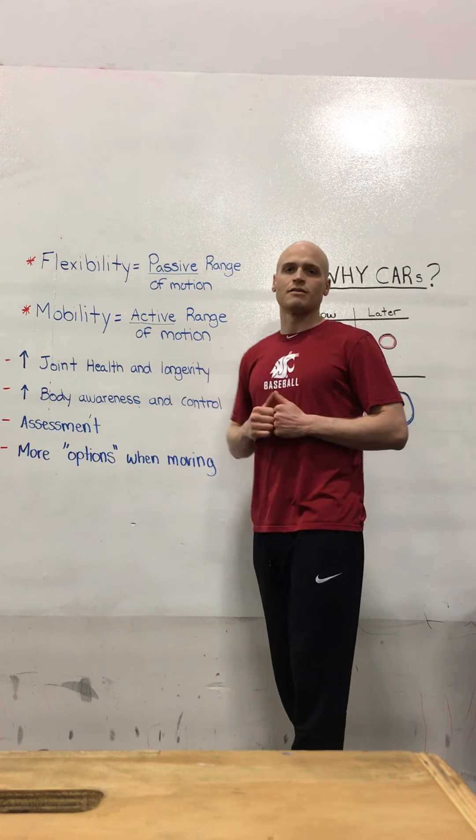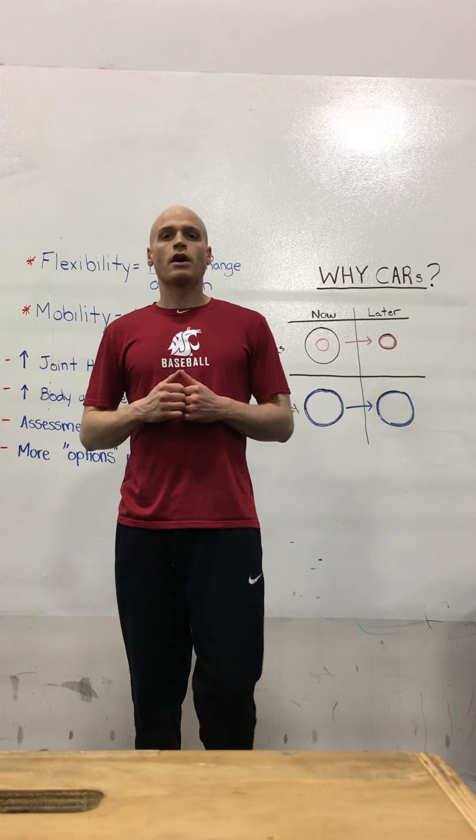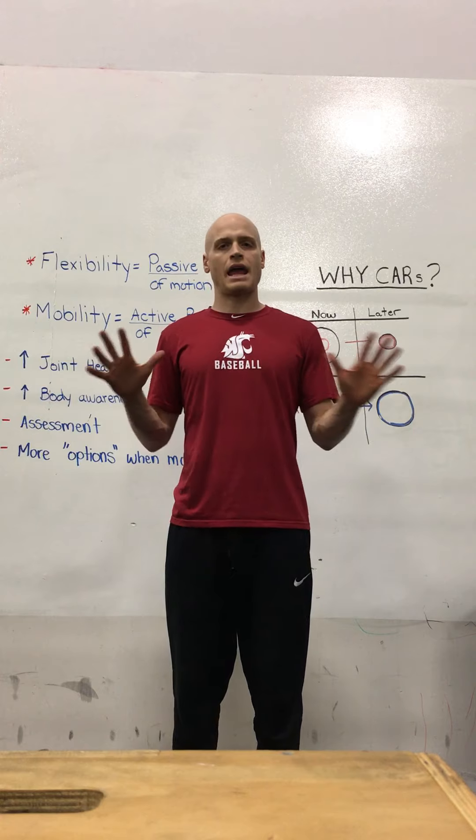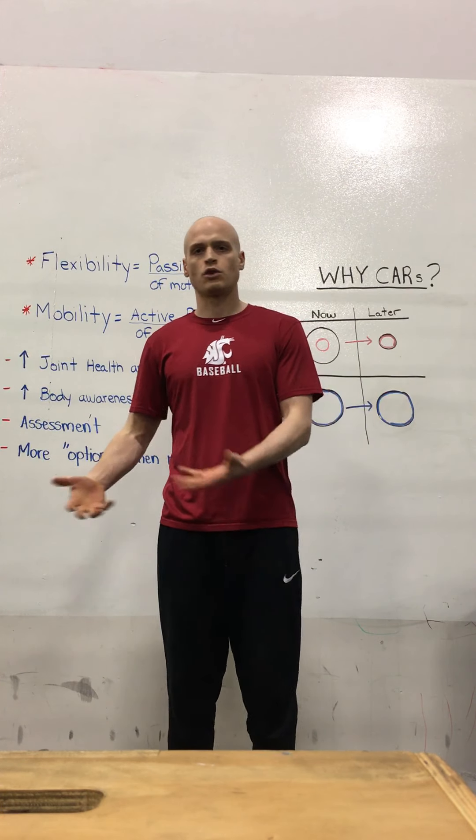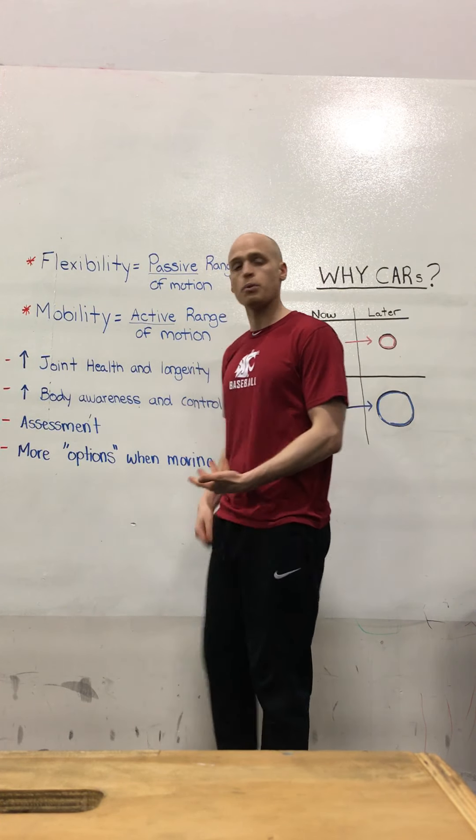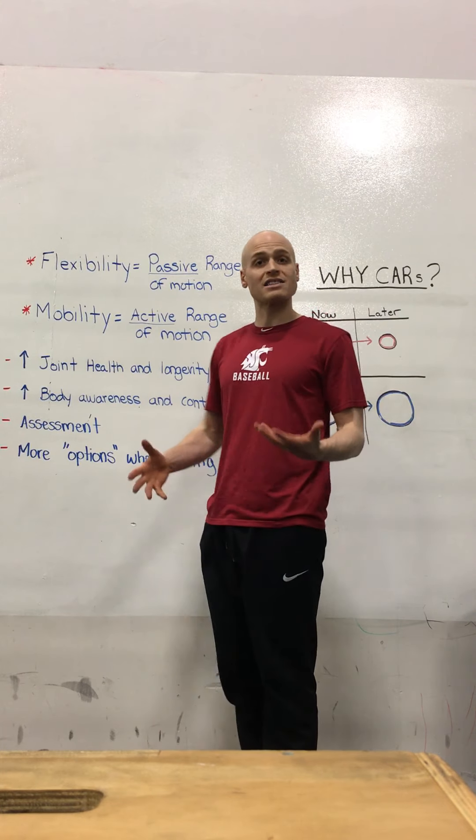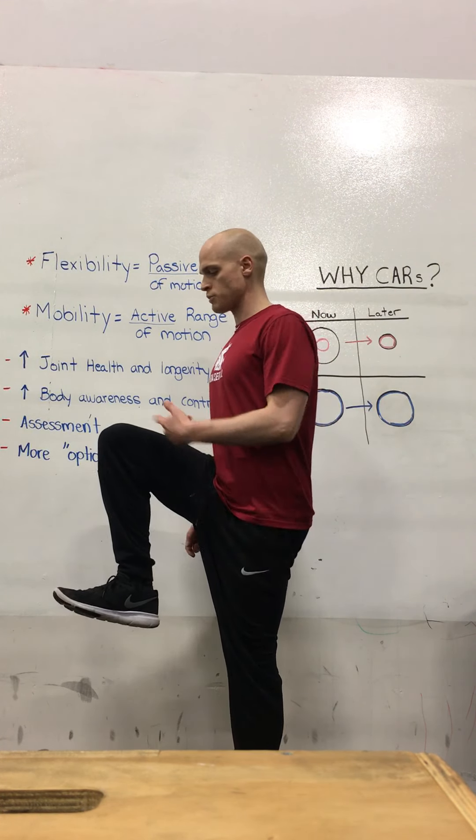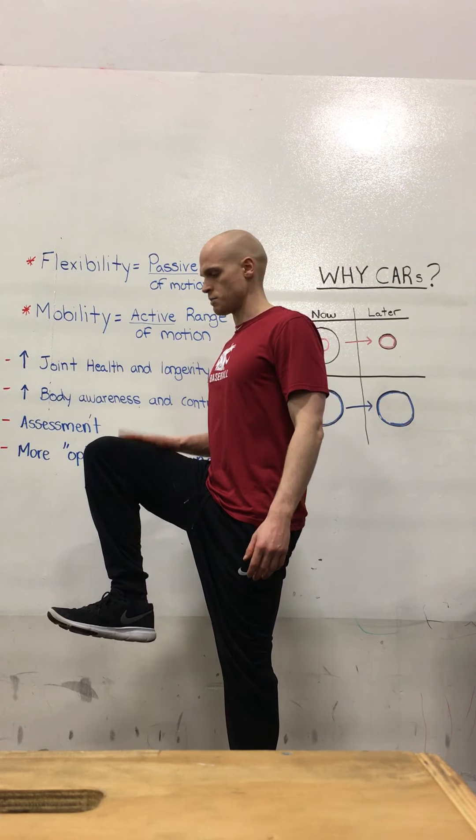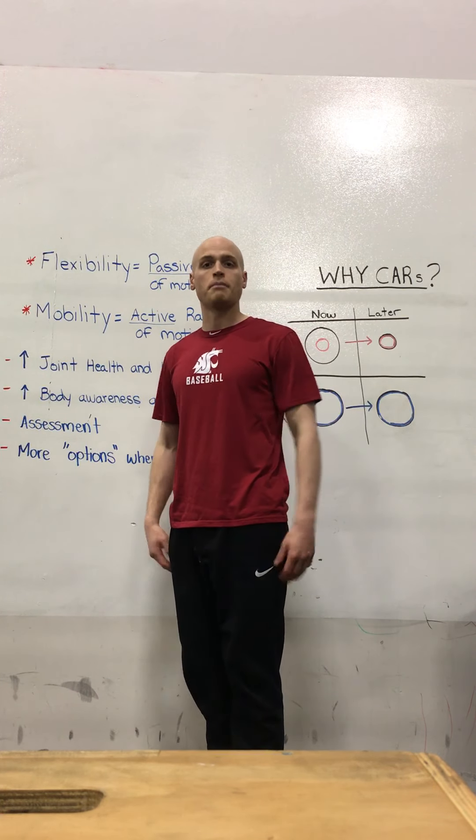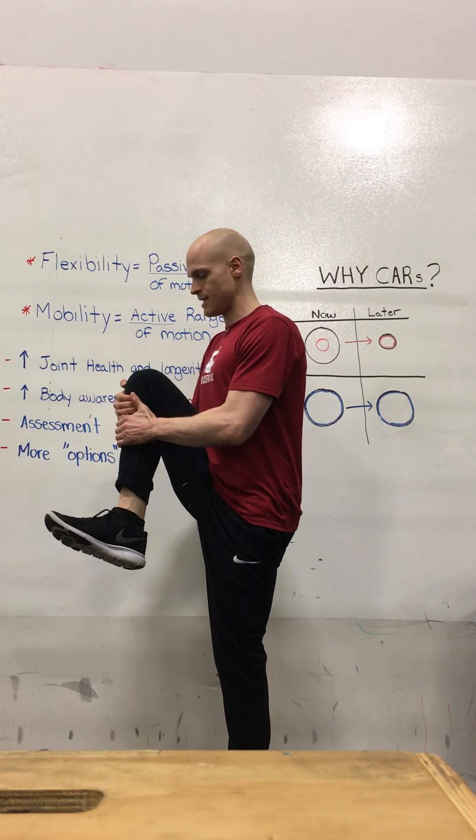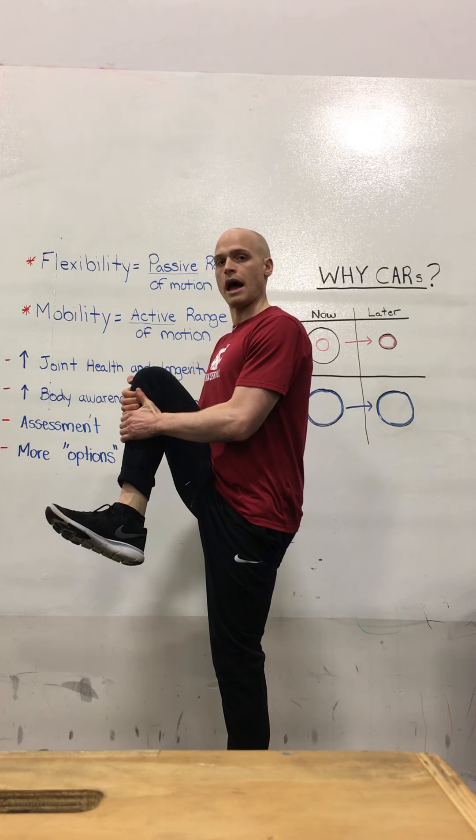Mobility would be your active range of motion or a range of motion that you can control, you can get to without any outside help. A good and easy example would be me pulling my knee up to my chest. Active range of motion would be how far I could pull my knee up towards my chest without anything else besides my leg actively doing it. Passive range of motion would be me using my arms and assisting and seeing how far up I could get my leg.